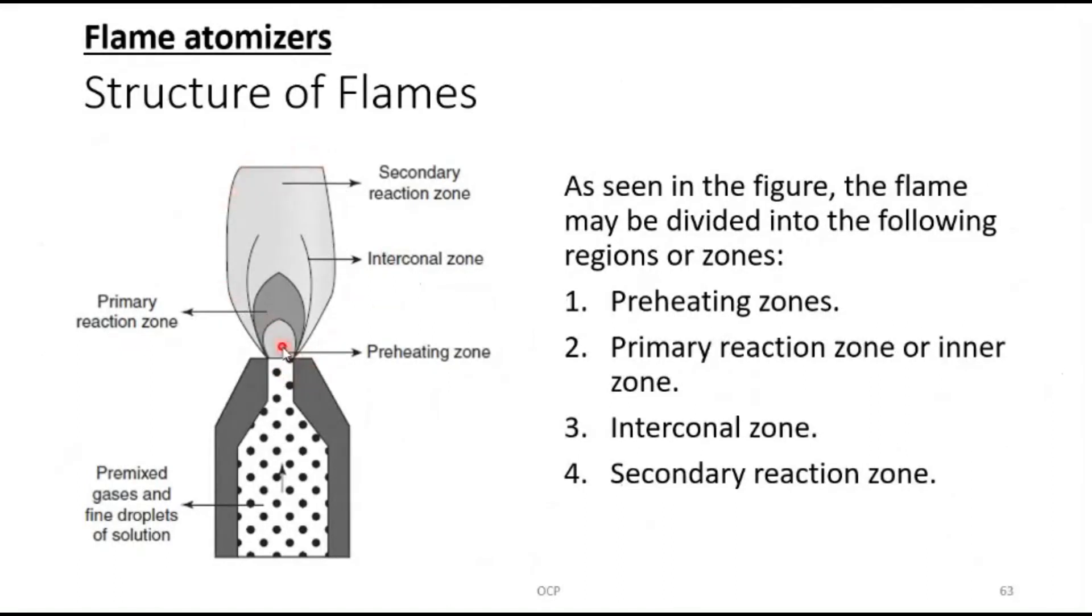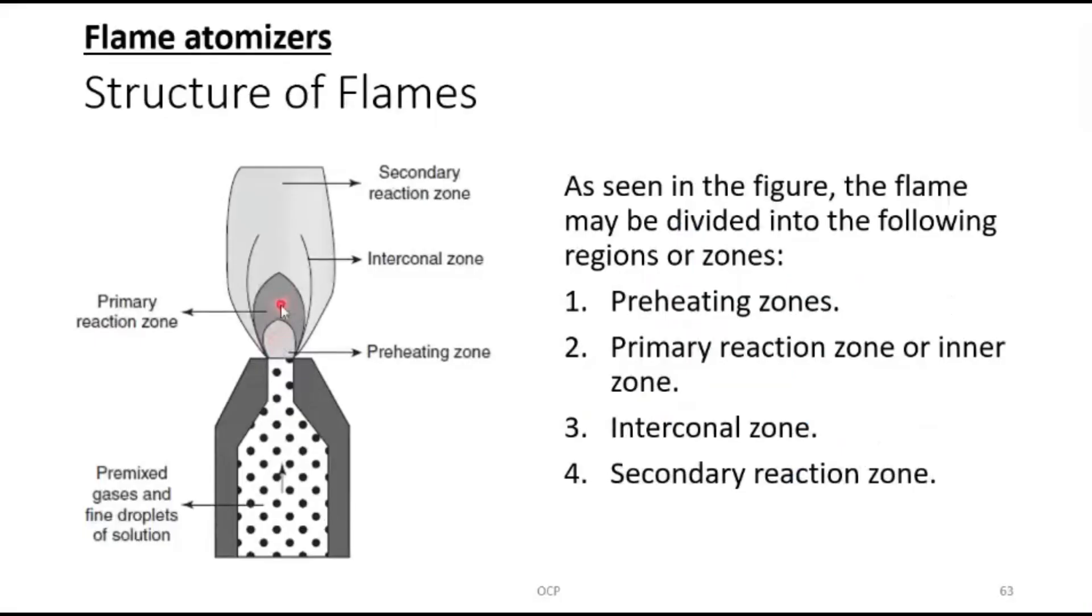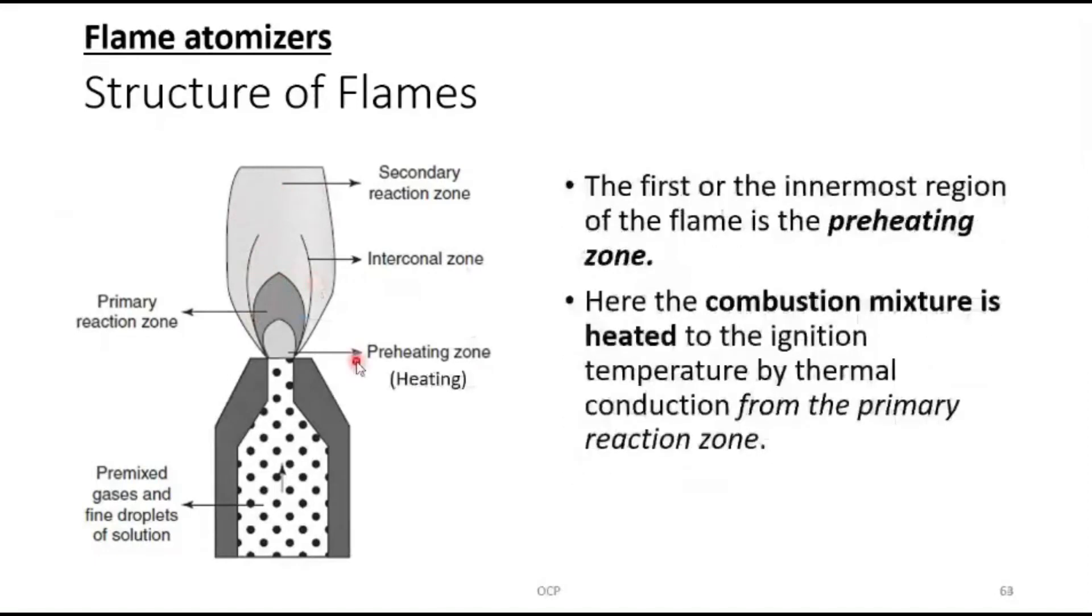Now let us see the structure of the flame. We are still looking at flame atomizers. There are mainly four regions of the flame. The region immediate to the tip of the burner is called the preheating zone. After that comes primary reaction zone, also called inner zone or inner cone.